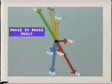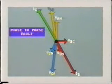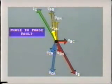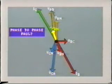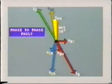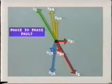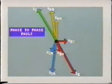This causes a change in the phase relationship of VAB, which is the voltage between lines A and B. As we know, this is the difference between VAN and VBN. Subtracting these phasors, we find that VAB moves back in phase angle — it now leads VAN by less than 30 degrees. The magnitude of VAB is also reduced slightly. We can see that this phase-to-phase fault has seriously distorted our previously balanced condition.